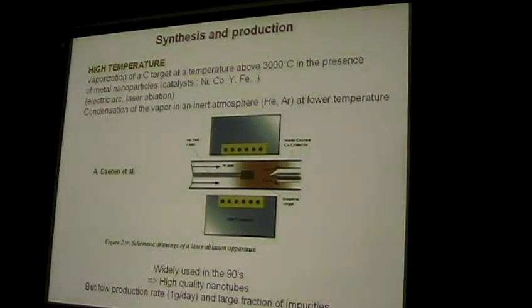This is why in the 90s, big industrial companies were not so excited about carbon nanotubes. But the situation changed around 2000 with new processes to synthesize carbon nanotubes by so-called medium- or low-temperature synthesis by chemical vapor deposition.